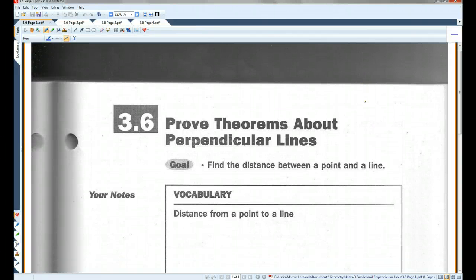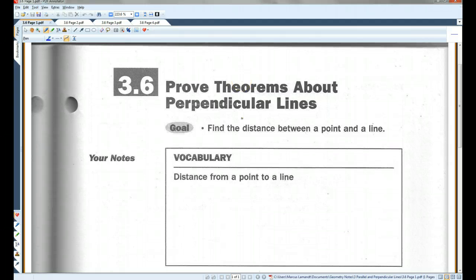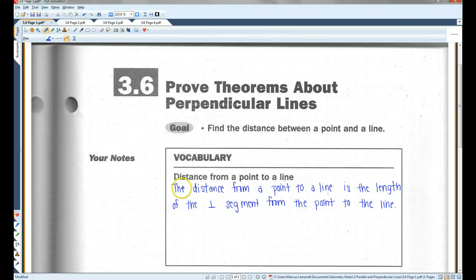Alright, last section in Chapter 3, 3.6, Proof Theorems About Perpendicular Lines. The distance from a point to a line is the length of the perpendicular segment from the point to the line.